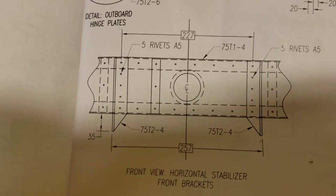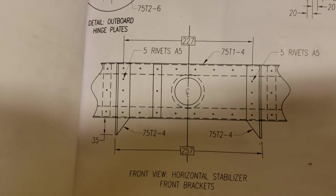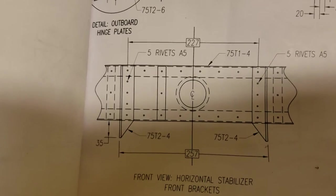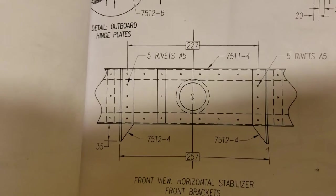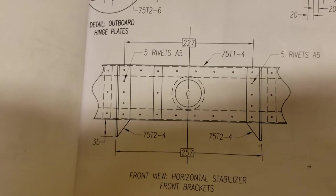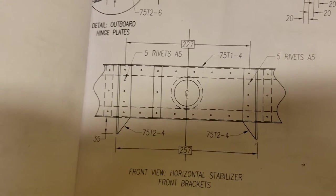Now the front brackets are actually two separate brackets, and so those are quite easy. They just end up in a specific spot measured against the center line, and you just put five A5 rivets in them.